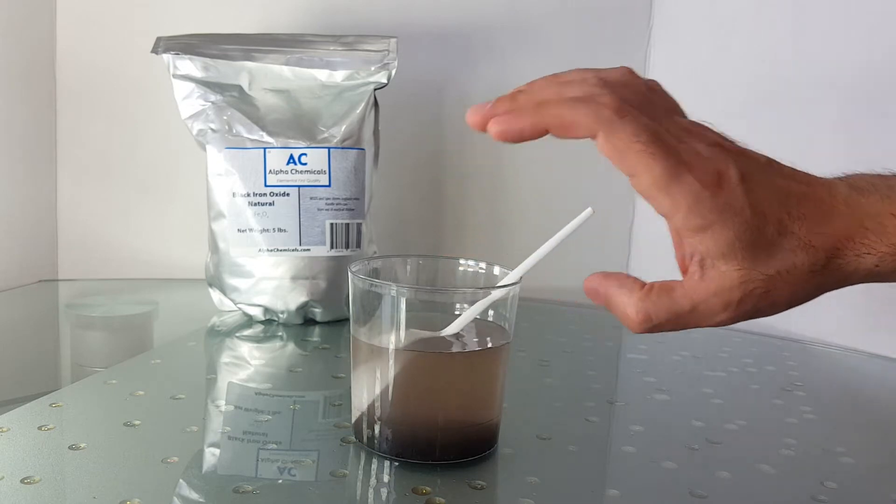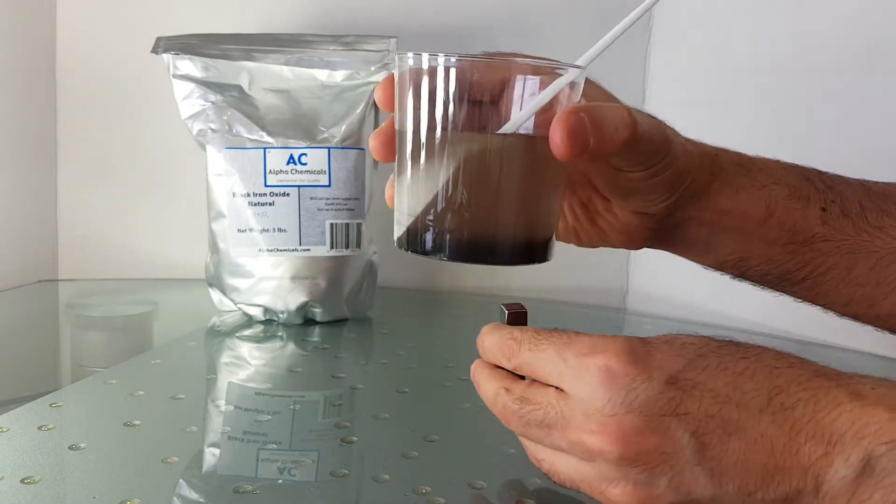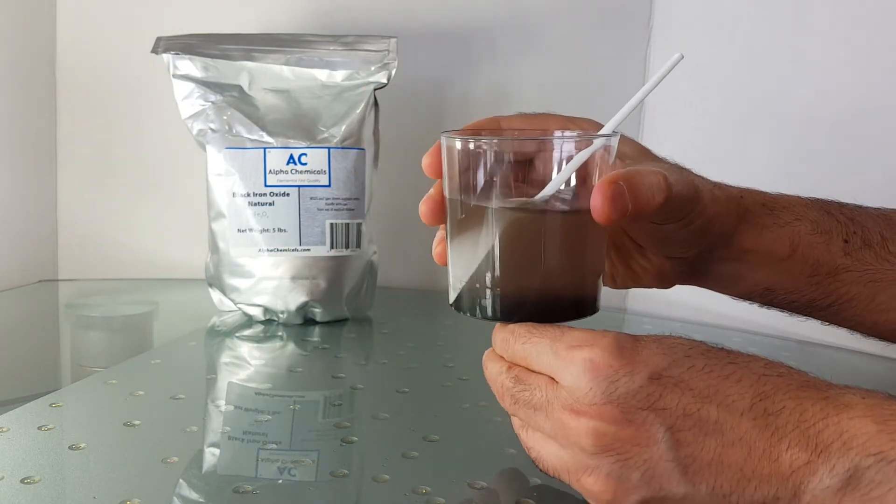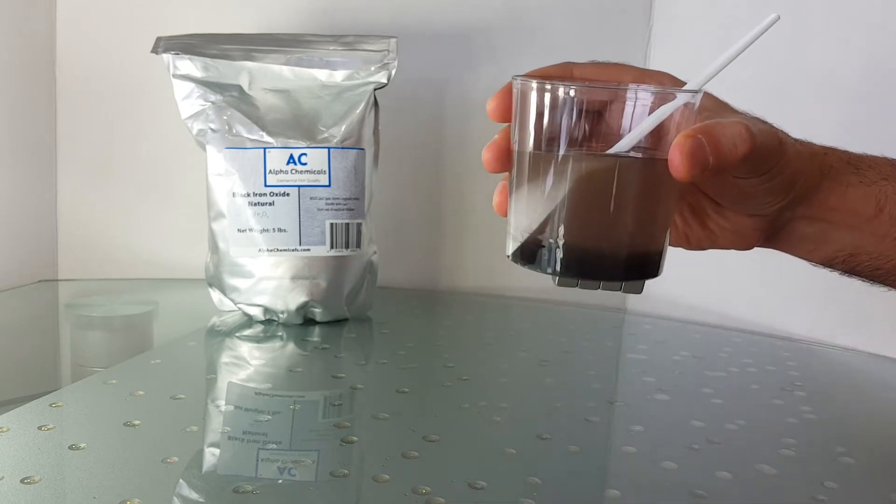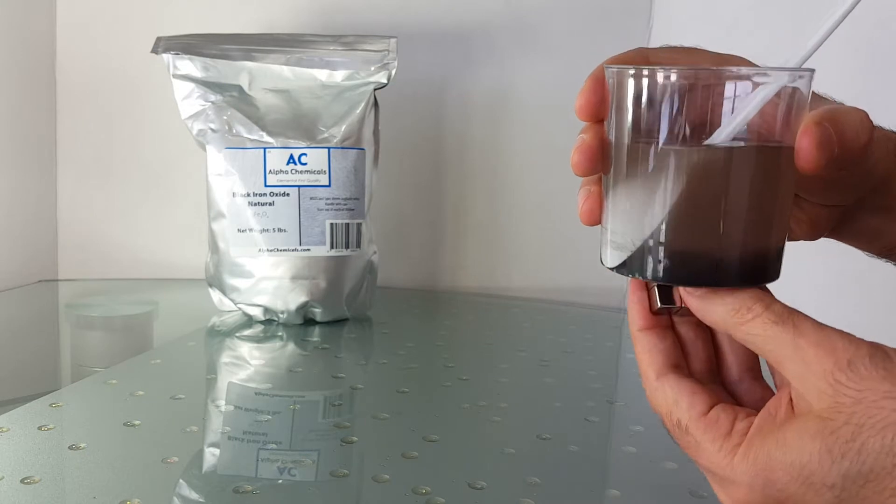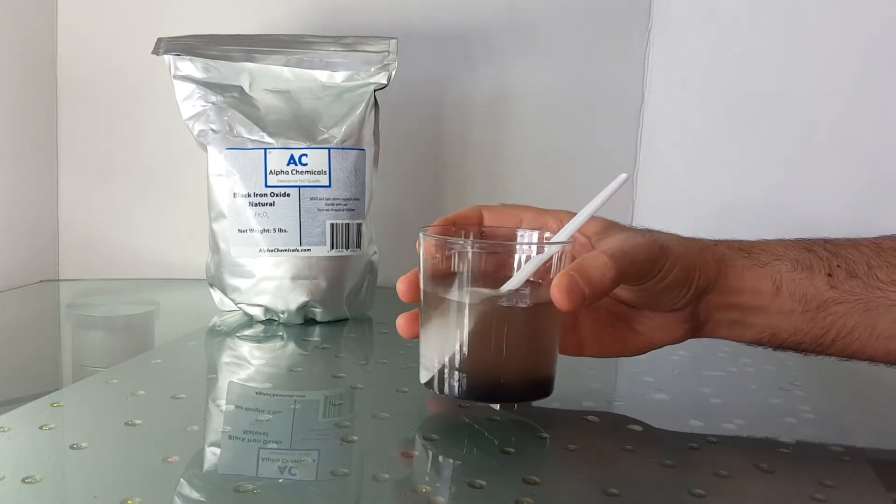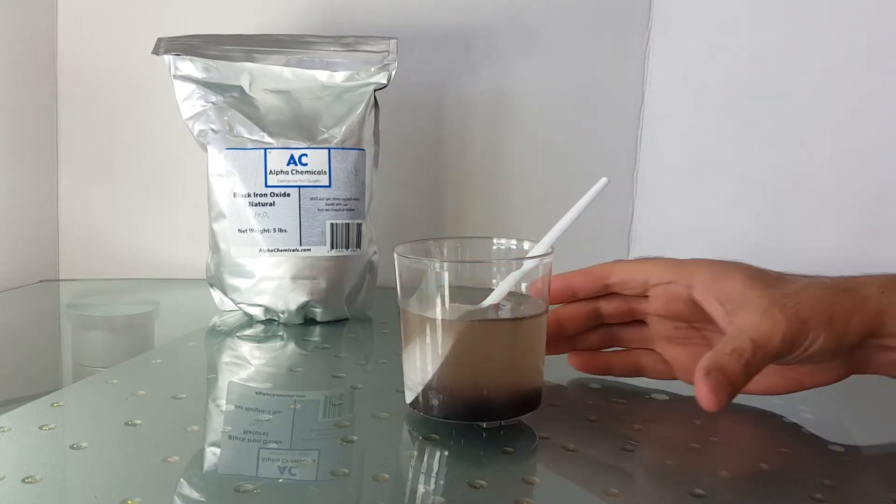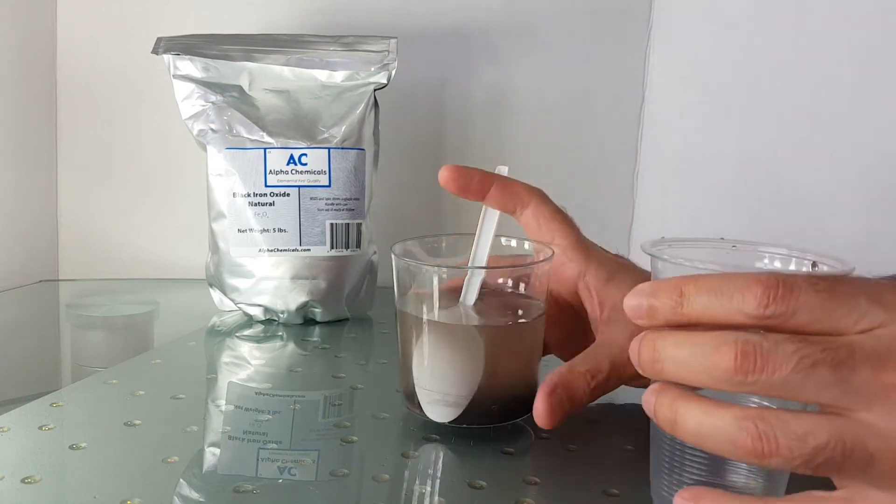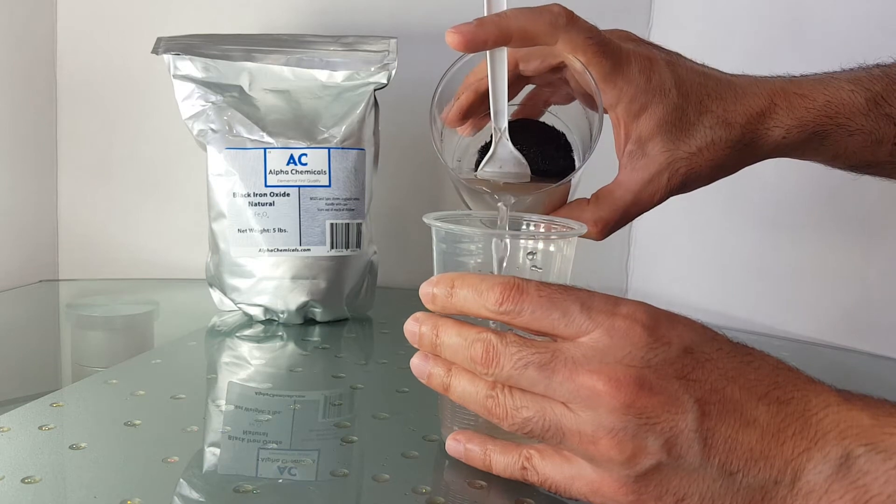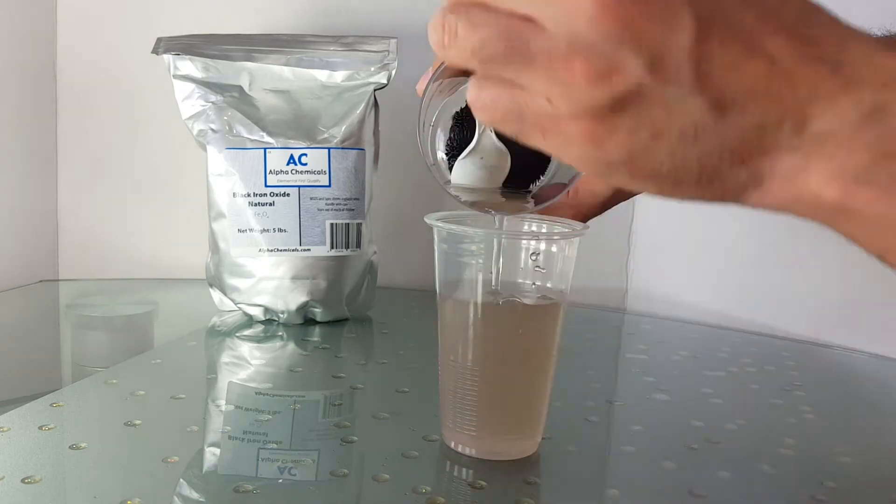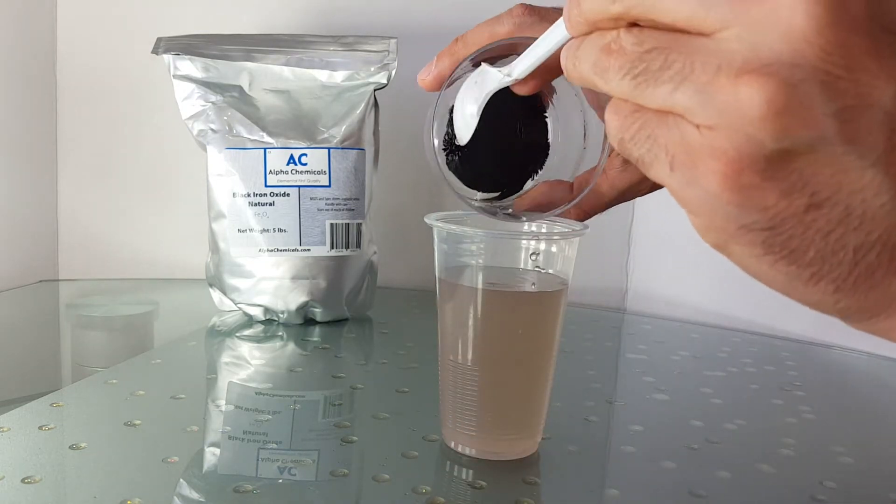Now we want to give it some time so that all of the iron oxide powder has sunk to the bottom of the cup. Using any strong magnet, I'm using neodymium magnets here, the powder is held by the magnet while we pour out the water. And this is how we're going to get rid of the impurities.